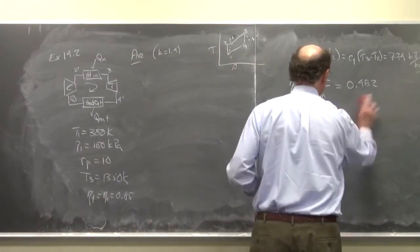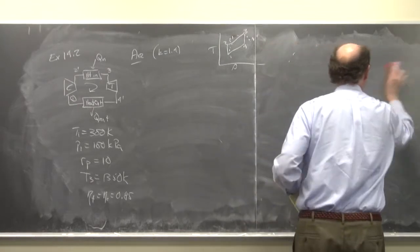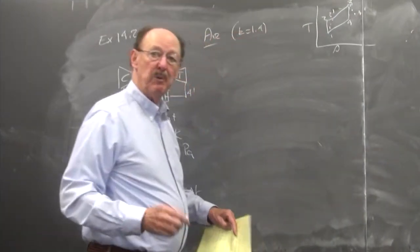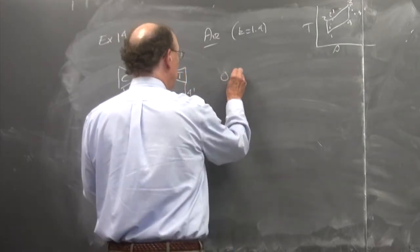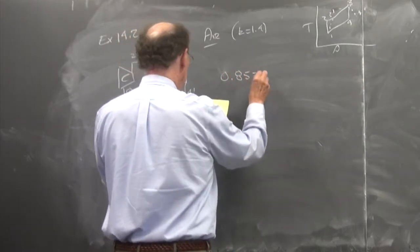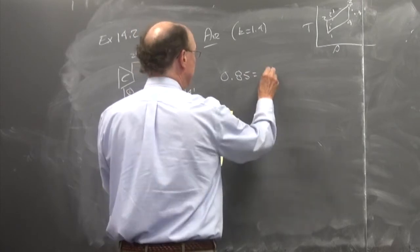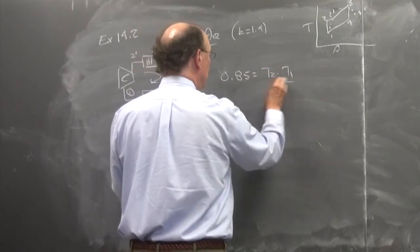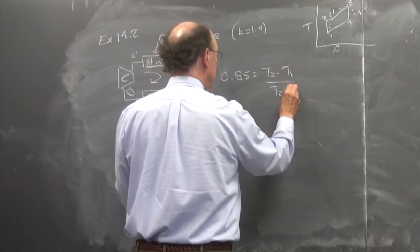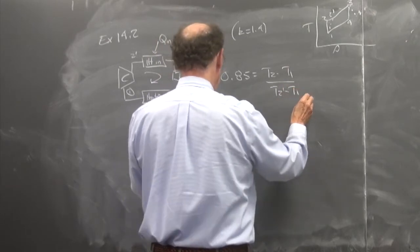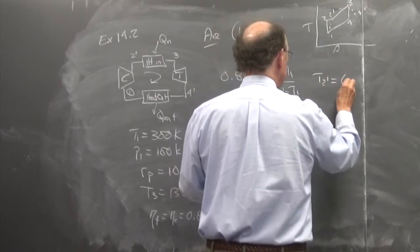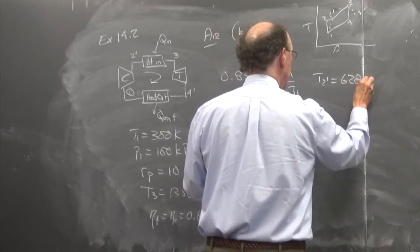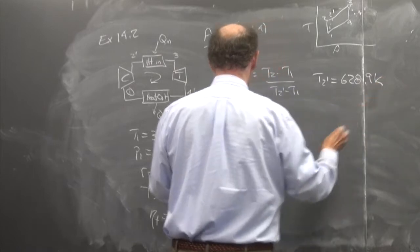And we'll see the effect of the efficiencies of dramatically decreasing performance. So we'll see the effect of that 0.85. If I look at it for the compressor: T2 minus T1 over T2 prime minus T1, and so I have T2 prime from this. If you substitute in and do it, 628.9 degrees K.